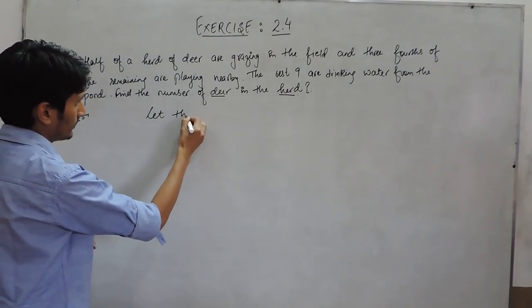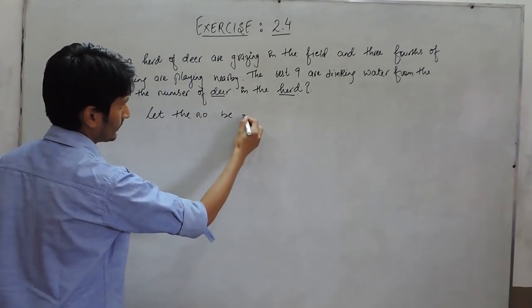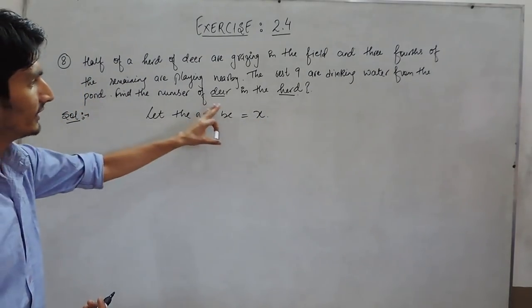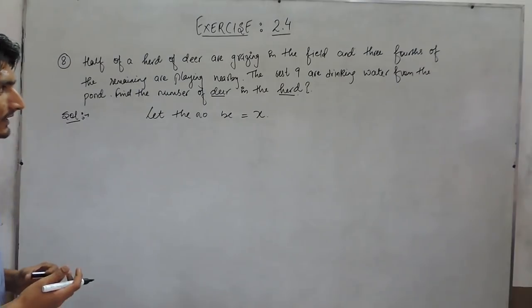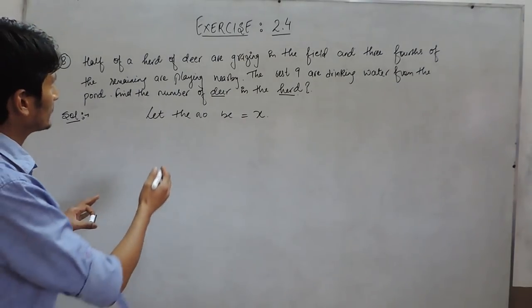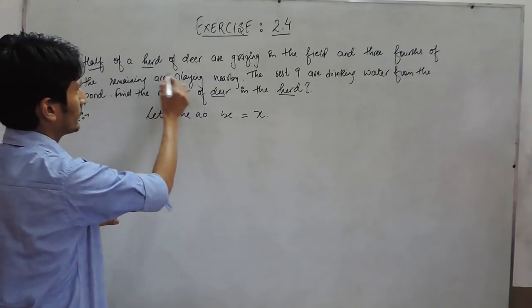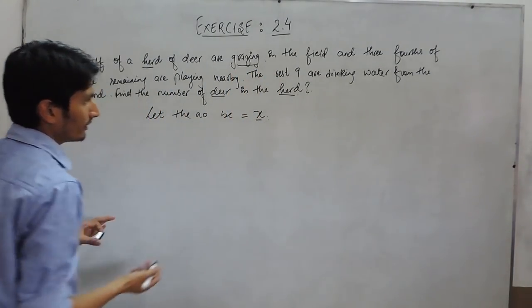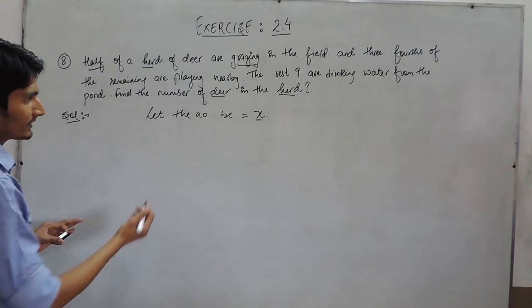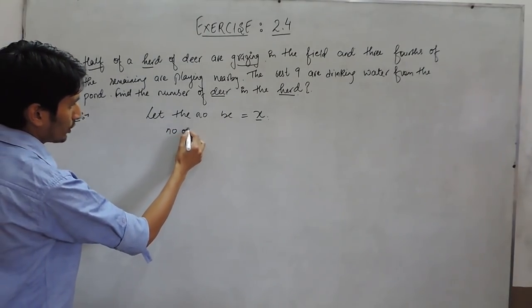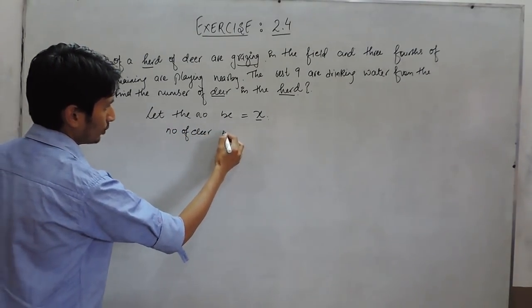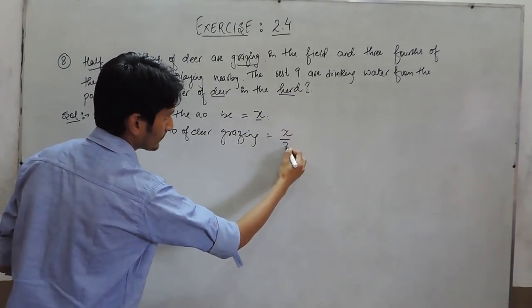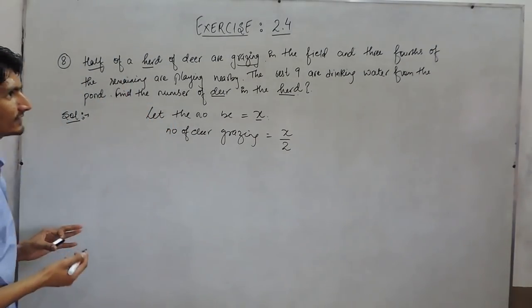Let the number be x. Suppose the total number of deer are x. In the first case, it is given that half of the herd are grazing. If the total number of deer are x, then the number of deer who are grazing is equal to x/2, because half are grazing.